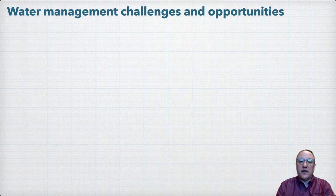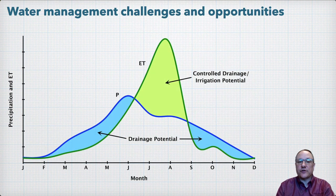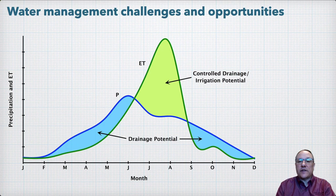Unlike many other conservation drainage practices, by providing additional water management capabilities, controlled drainage can potentially also have positive crop yield impacts. Looking at water management challenges and opportunities on poorly drained soils, this figure shows typical annual patterns of precipitation in blue and evapotranspiration, or ET, in green. These curves will vary depending on location — these particular curves were developed using data from eastern South Dakota — but the same general patterns will apply for row crops across the Midwest.